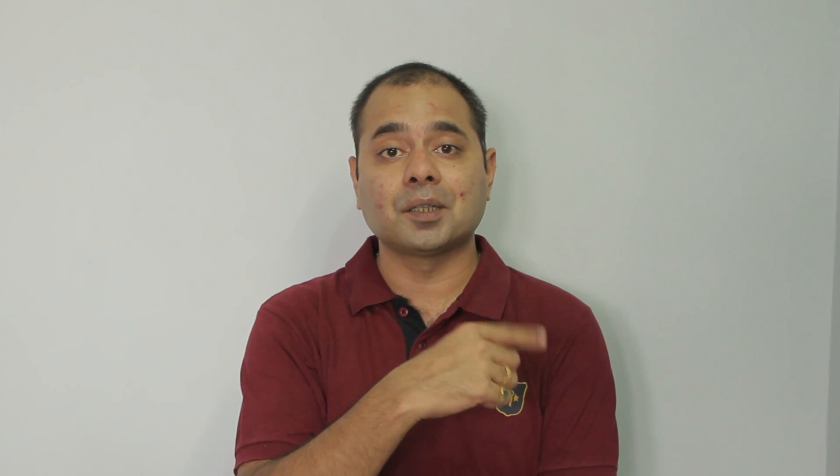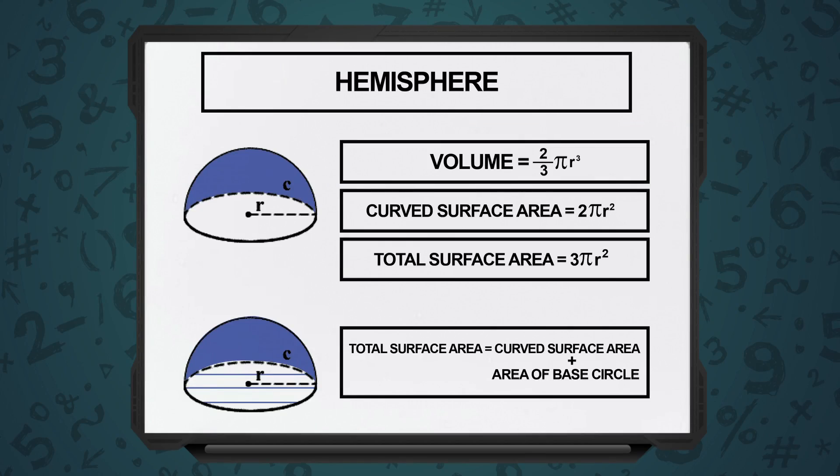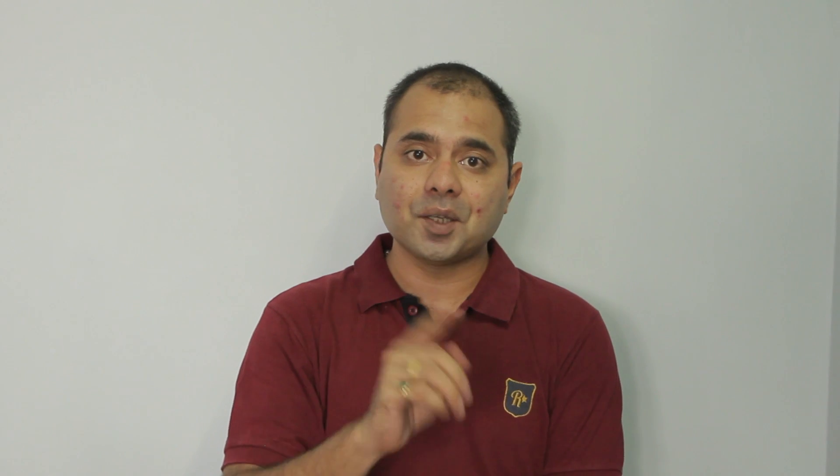Now, we come to a hemisphere. Just recollect what happened when we had discussed the semicircle and circle in two-dimensional figures. When we come to a hemisphere, the volume is straightforward. It is going to be half that of a sphere. So, volume of a hemisphere is 2 by 3 pi r cube.